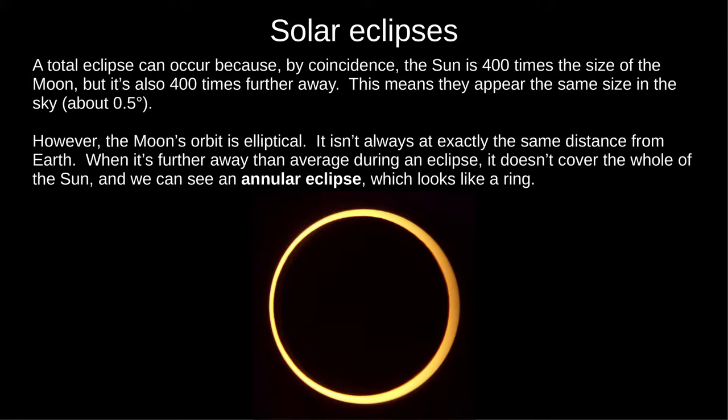But the Moon's orbit is elliptical, not circular. Sometimes it's a bit closer, and sometimes it's a bit further away. If an eclipse happens when the Moon is quite distant, it doesn't cover the entire Sun, and we see a ring shape, called an annular eclipse.